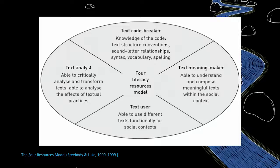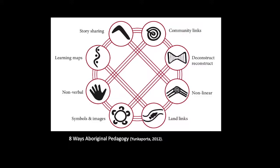The Four Resources Model describes four literacy practices that are necessary in order to create and comprehend traditional and contemporary texts. Each of the following learning experiences have been constructed upon one of these literacy practices. As shown here, the Eight Ways Aboriginal Pedagogy Model consists of eight interconnected learning processes. These processes were incorporated into the learning experiences to ensure that these experiences are supportive and culturally familiar for Aboriginal and Torres Strait Islander students.